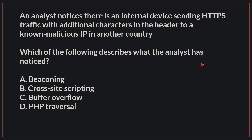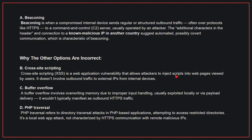An analyst notices there is an internal device sending HTTPS traffic with additional characters in the header to a known malicious IP in another country. Which of the following describes what the analyst has noticed? The correct answer is A. Beaconing. Beaconing is when a compromised internal device sends regular or structured outbound traffic, often over protocols like HTTPS, to a command and control server, usually operated by an attacker. The additional characters in the header and connection to a known malicious IP in another country suggest automated, possibly covert communication, which is characteristic of beaconing.